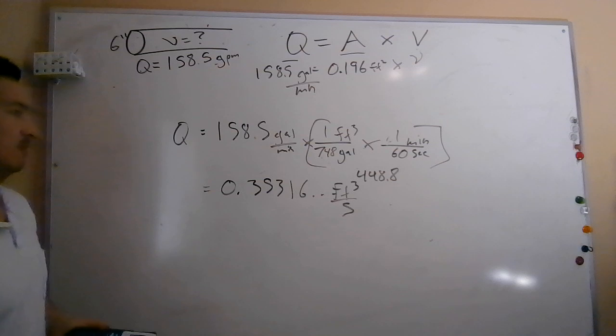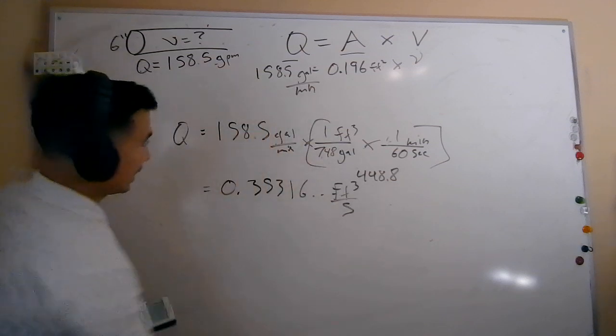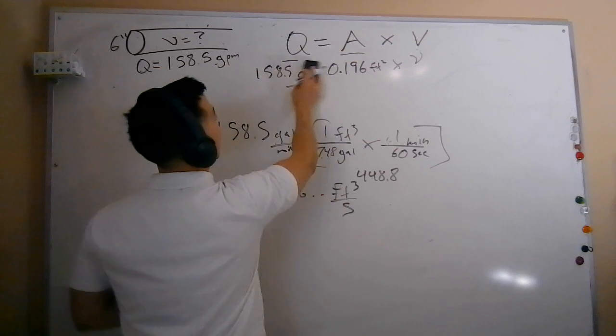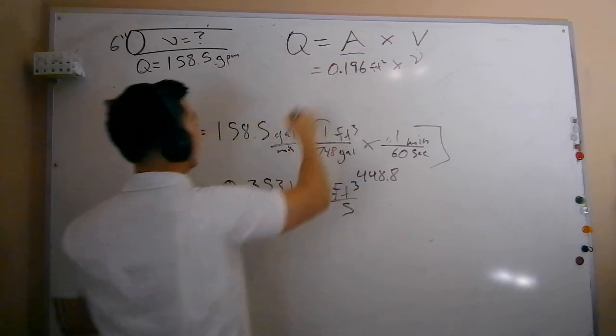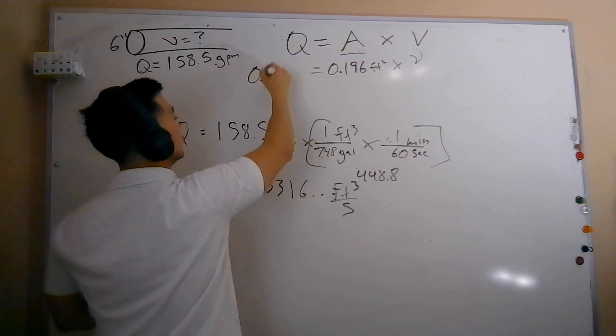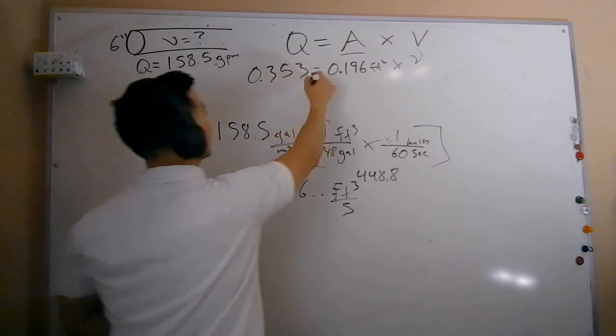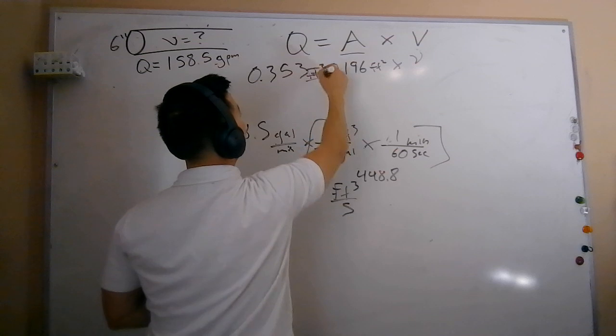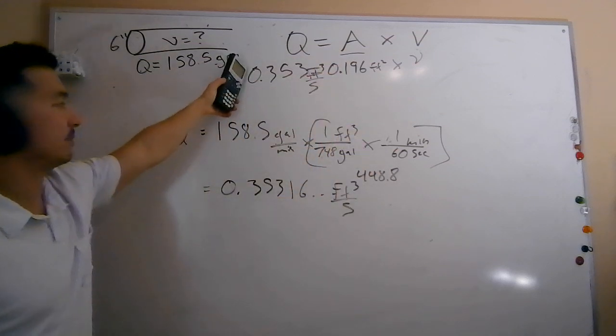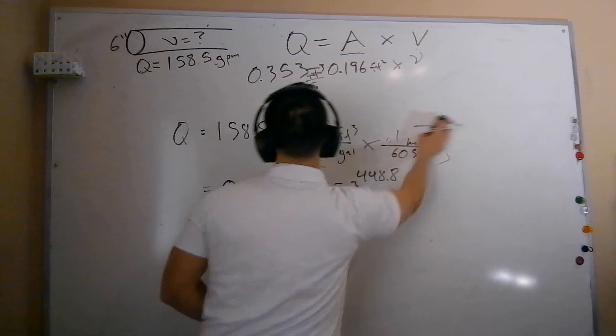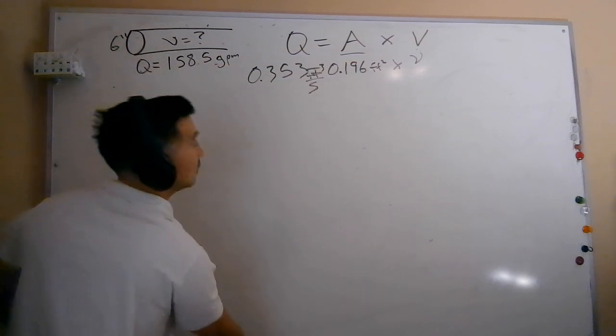That's what we want for this problem, cubic feet per second. So coming back up to the top here, if I rewrite out my flow rate now in CFS, we'll do 0.353. That's what I'll carry for the sake of this problem. Cubic feet per second. Now I'm just going to use this top formula. I'm good with the flow. Don't need this here anymore. And now I'm going to solve for velocity.